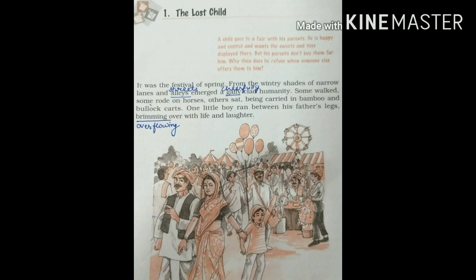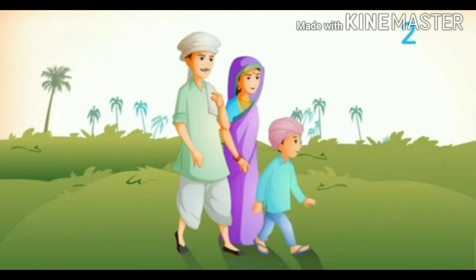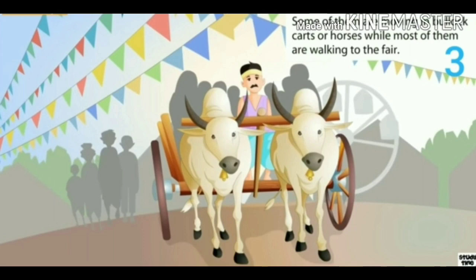It was the festival of spring. From the wintry shades of narrow lanes and alleys emerged a gaily clad humanity. Some walked, some rode on horses, others sat being carried in bamboo and bullock carts. One little boy ran between his father's legs, brimming over with life and laughter. Here, alleys means streets and gaily means cheerfully — they are excited to go to a fair. The boy is overjoyed and overflowing with excitement.